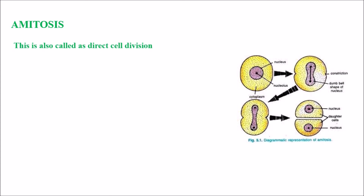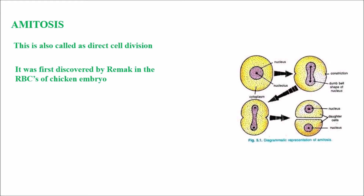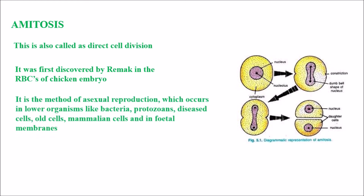Amitosis is also called direct cell division. It was first discovered by Remak in the red blood cells of chicken embryo. Amitosis is a method of asexual reproduction which occurs in lower organisms like bacteria, protozoans, diseased cells, old cells, mammalian cells and fetal membranes.